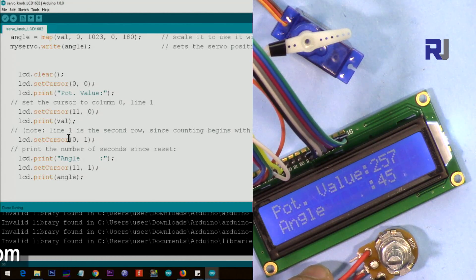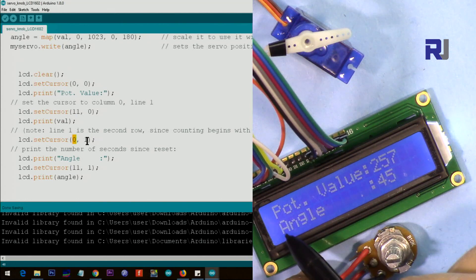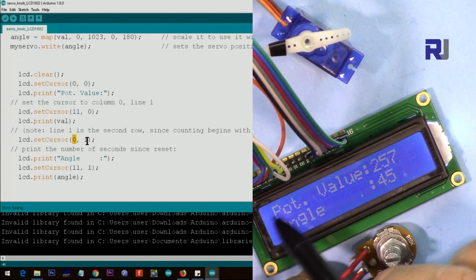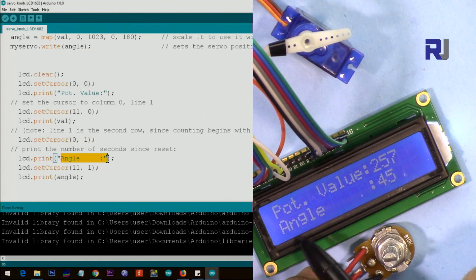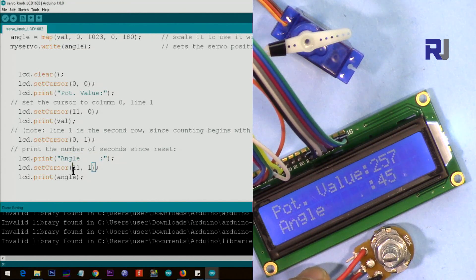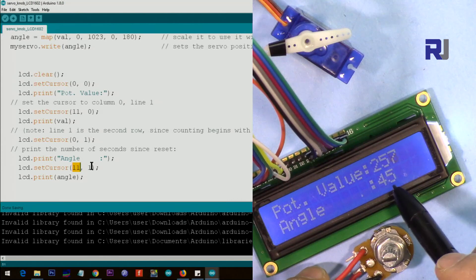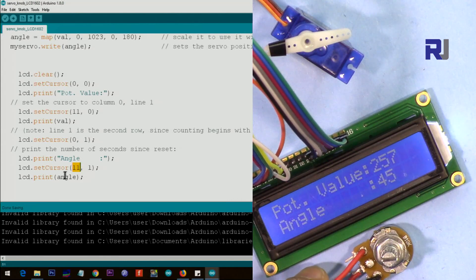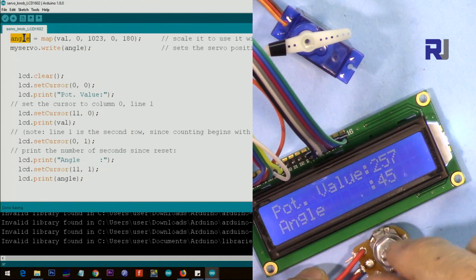After this, we set cursor at character 0, line 1. This means character 0, line 1. That was line 0, line 1. And then we print this text. This text with extra space, I wanted to make sure that these are aligned together, so they look beautiful. And then this line sets the cursor at character 11, line 1. Character 11, line 1 is here. This was character 11, line 0. And then we print the angle, which has been calculated here, so the value will be printed as you can see.